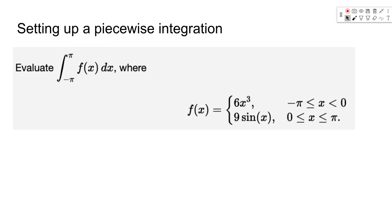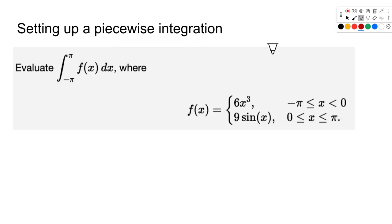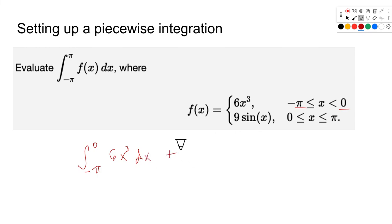Another case: a piecewise function. We're integrating a piecewise function from negative pi to positive pi. All we do is break it up into two integrals: integrate from negative pi to 0 using one piece of the function, plus integrate from 0 to positive pi using the other piece — which is 9 sin x dx. Now we've got two problems in one, but it's not too bad. I took this right out of the homework so you've got it set up; now you can integrate it.